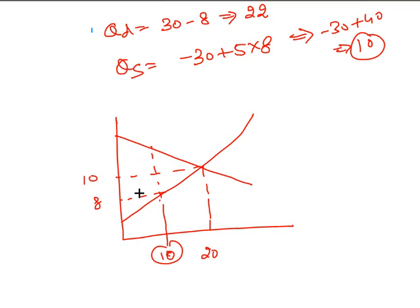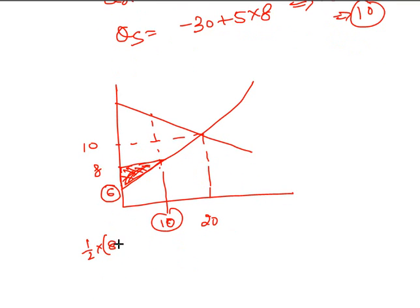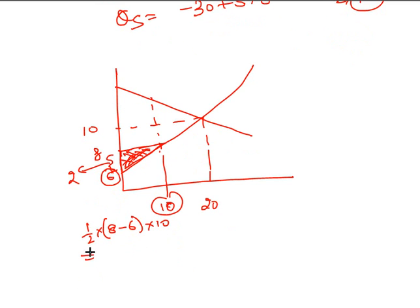When you supply only 10 units, the producer surplus has shrunk. It was 6 from the previous discussion. The producer surplus is now half into base into height. The base is 8 minus 6, which is 2, and the height is 10. So this will be half into 2 into 10, which equals 10. So the producer surplus has gone to 10.